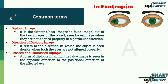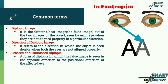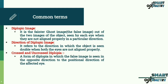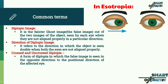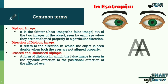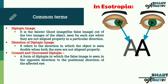In exotropia, the eye turns out; the image is seen moving inwards towards the nose, or appears crossed. In esotropia, the eye turns in; the image is seen moving outwards, away from the nose, or appears to be uncrossed.